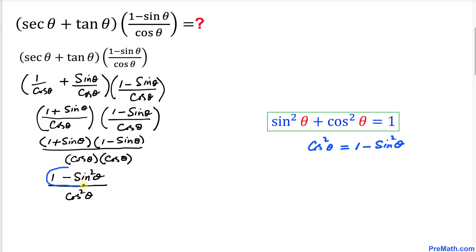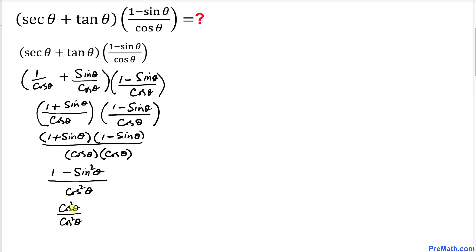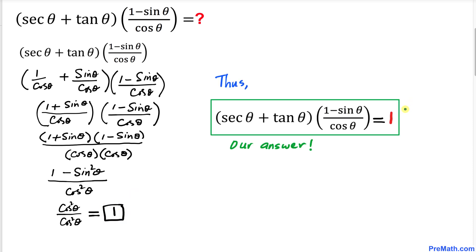So I replace 1 minus sine²θ with cosine²θ. Our numerator becomes simply cosine²θ, divided by cosine²θ as well. Cosine²θ divided by cosine²θ equals 1. Thus our simplified answer turns out to be 1. Thanks for watching, and please don't forget to subscribe to my channel for more exciting videos. Bye!